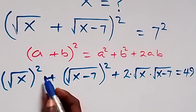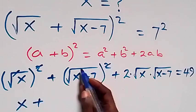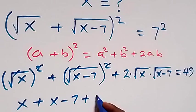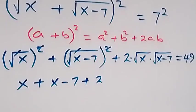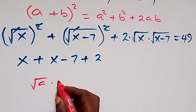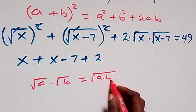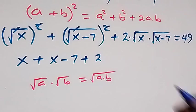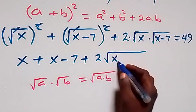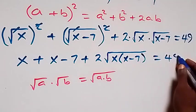The square cancels the square root, giving us x, and similarly we get x minus 7. Then for the 2ab term, using the rule that root a times root b equals root of a times b, we have plus 2 times root of x times x minus 7.